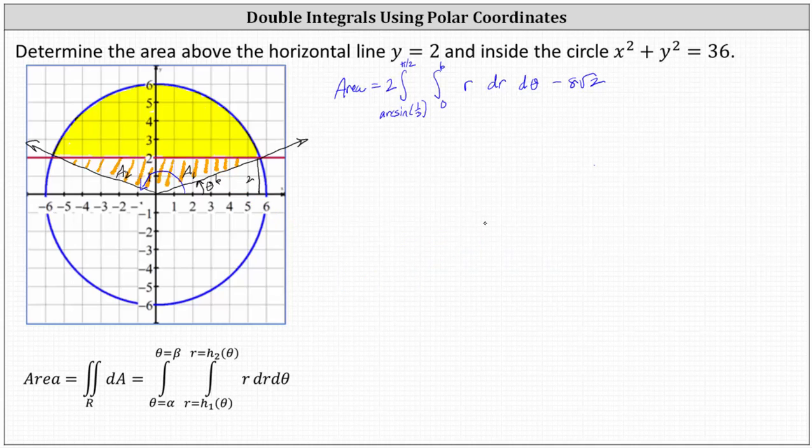And now let's integrate. Integrating with respect to r, we have r squared divided by two, or one half r squared. When r is six, we have one half times 36, which is 18. When r is zero, we have zero.